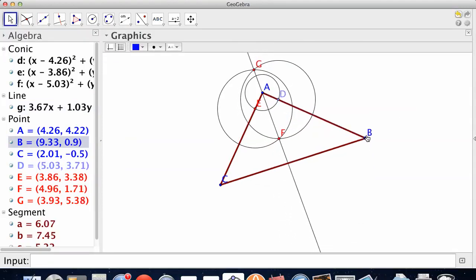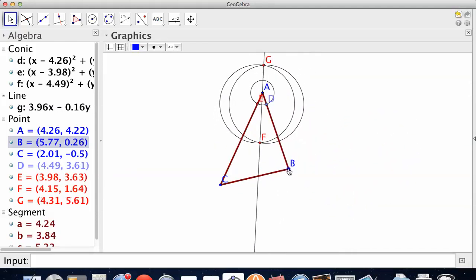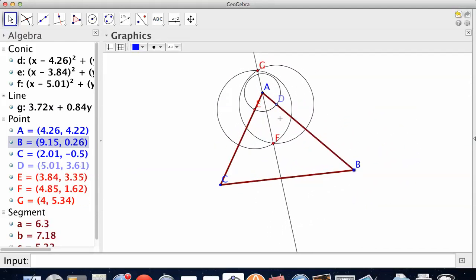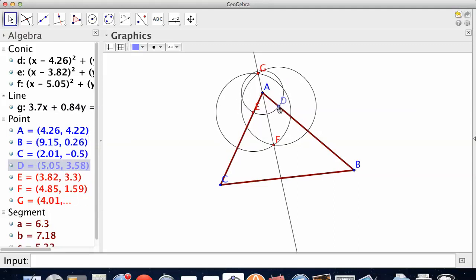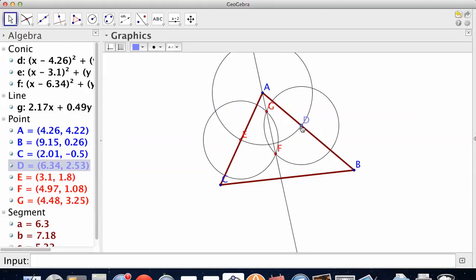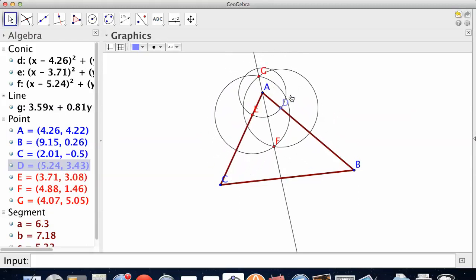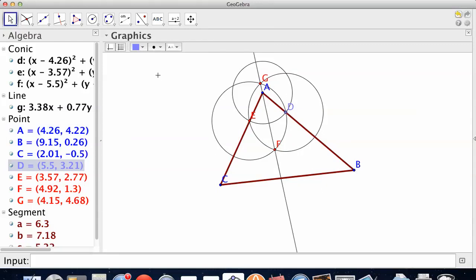No matter what I do to this, that line always goes through A. No matter how big I make that first circle. That line is always going through A. I didn't make it through A. I made it through G and F. It's going through A.